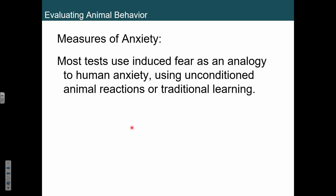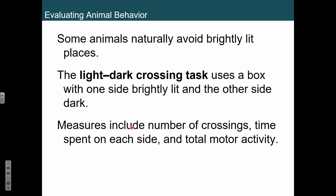What about anxiety? For human anxiety, you can just ask somebody how anxious they are. With animals, we've got to look at their behavior closely. One often-used test is what we call a light-dark crossing task. You have one side that's well-lit and the other side is darker. You see how many times the animal crosses back and forth and how much time they spend in one area versus another. Lots of animals will prefer to stay in the dark part so they can stay hidden — they may not go over to the light part as often.